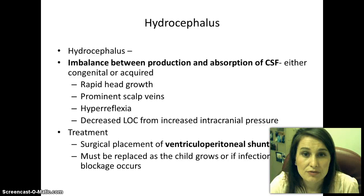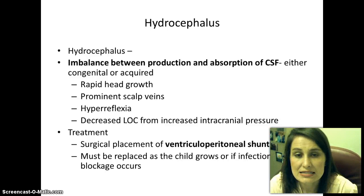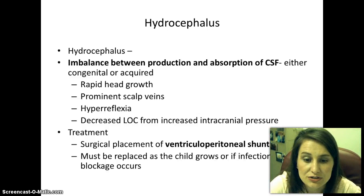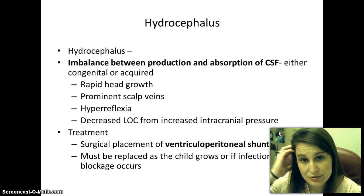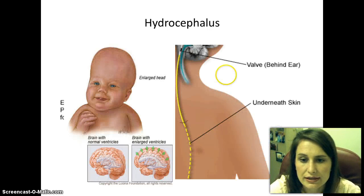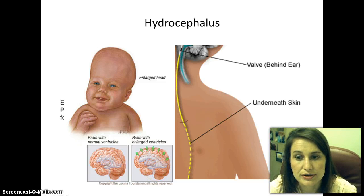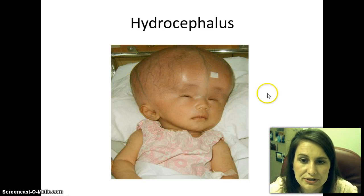Hydrocephalus involves rapid head growth — we measure frontal-occipital circumference (FOC) and watch it increase. They also have very prominent scalp veins, hyperreflexia, and decreased level of consciousness, all from that increased intracranial pressure. Treatment will be surgical: placement of a VP shunt. The VP shunt is in the brain and has a catheter that goes into the stomach, coiled up there. However, it will need to be replaced as the child grows because it can become displaced. Here's a picture showing the hydrocephalic head with very prominent scalp veins.